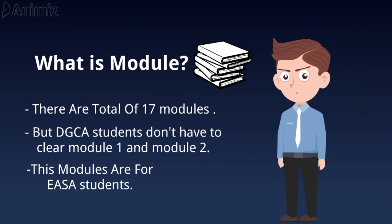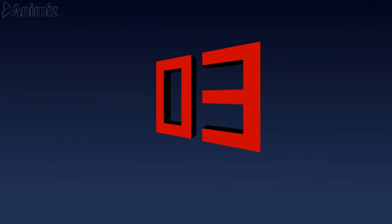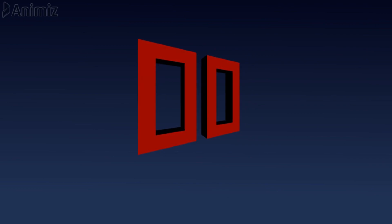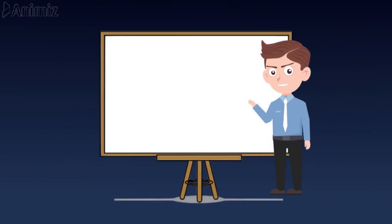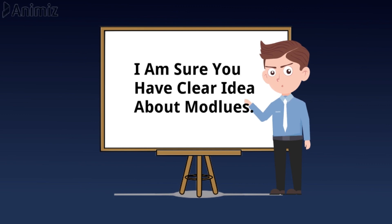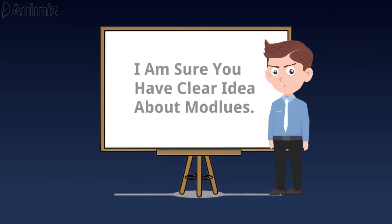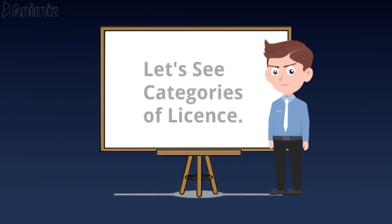The names of all modules are on your screen. For a PDF you can message us on Instagram or join our WhatsApp group — the link is in the description box. Now that you have a clear idea about what modules are, let's see how many categories of license DGCA provides.